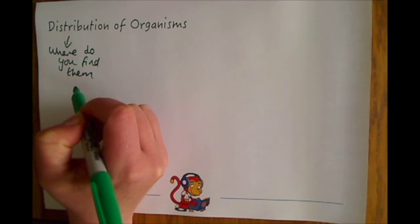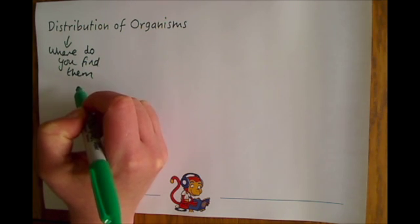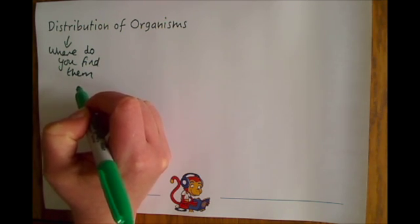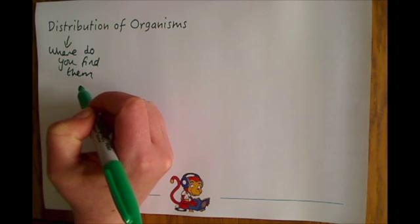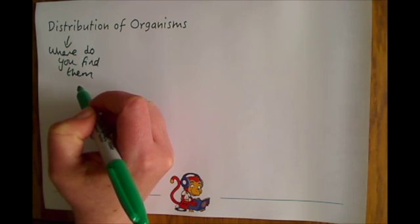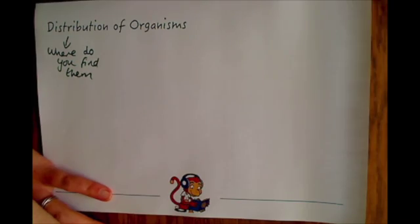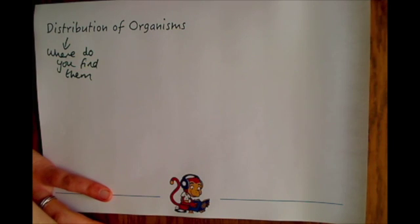This could be looked at on an international scale, globally where different species of animals or plants are found. It could be looked at on a national scale across Britain, looking at where particular species were found and distributed. Or simply you could look at it on a local level, like within the same wood or shoreline where different organisms are found.